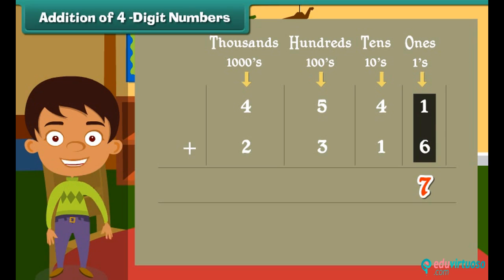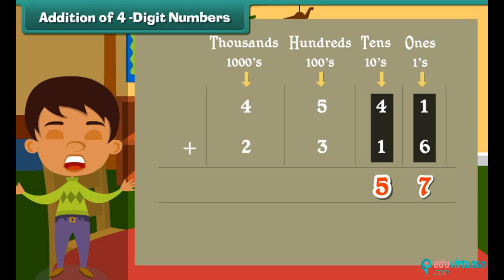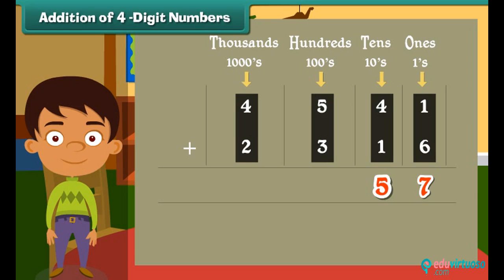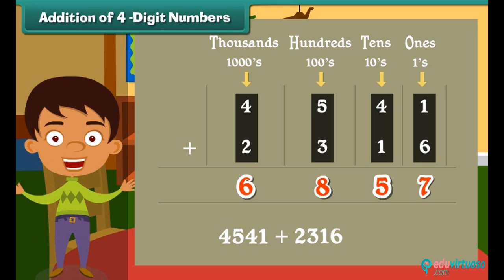Now we move to add the tens. Four plus one is equal to five. Similarly, we add the numbers under place hundred and thousands. The numbers we get are eight and six respectively. So given numbers 4541 and 2316 when added is equal to 6857.